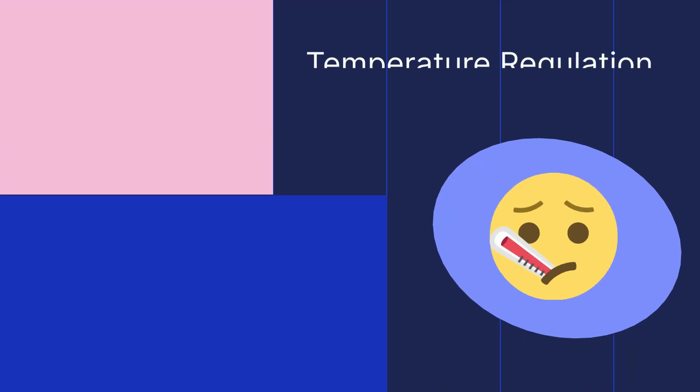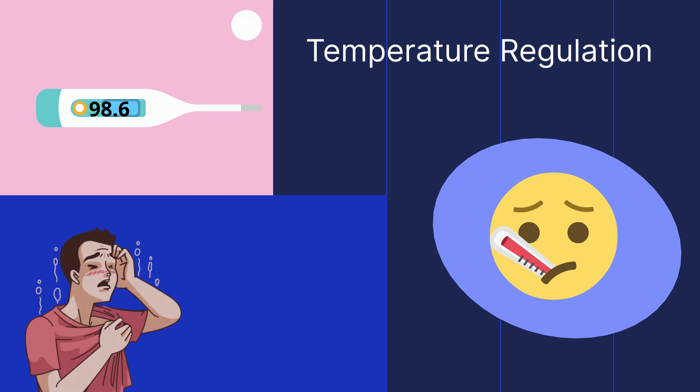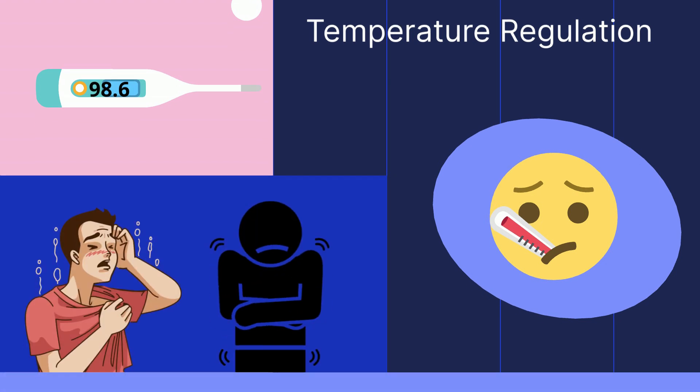Temperature regulation: the body maintains a constant internal temperature of about 98.6 degrees Fahrenheit. This is done through sweating, shivering, and blood flow.